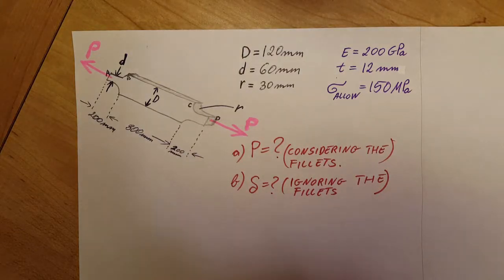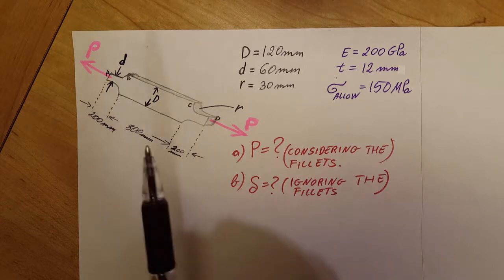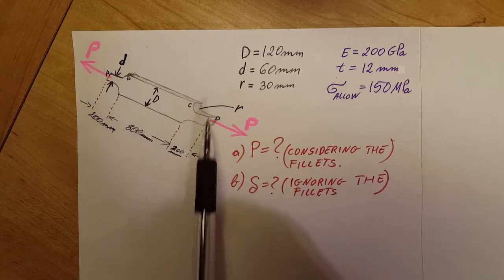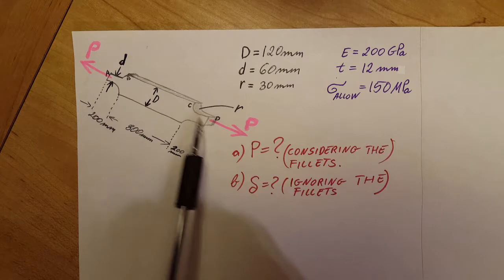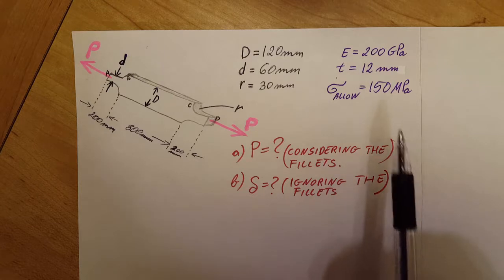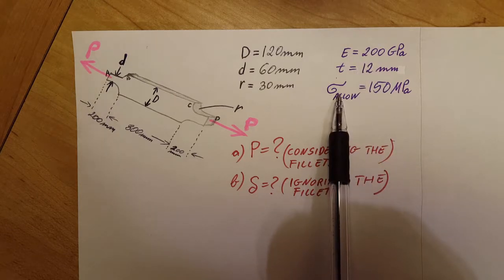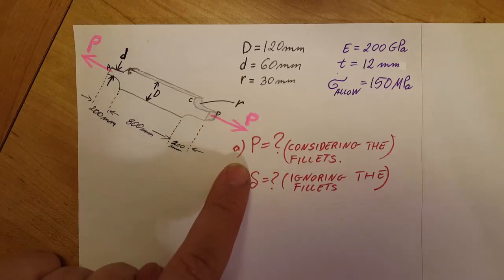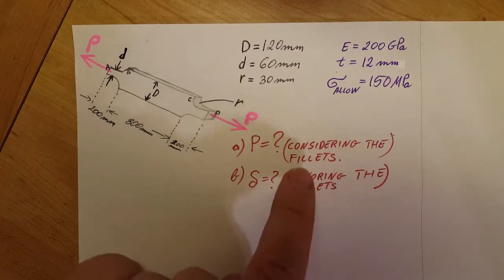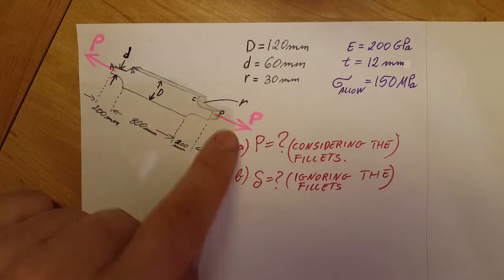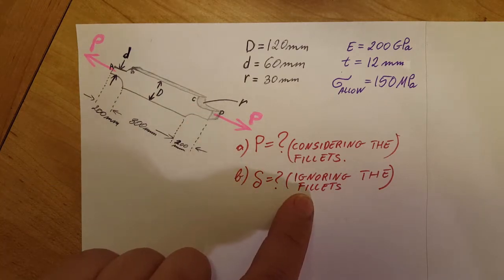This is a strength of materials problem. We have a steel plate which is 12 millimeters thick and it has two shoulder fillets at point B and point C. We are given an allowable stress of 150 megapascals. They are asking us to find the axial force considering the fillets, and also to find the elongation due to this axial force, ignoring the fillets.